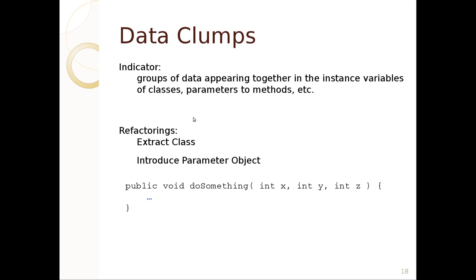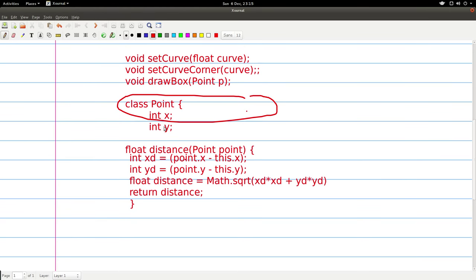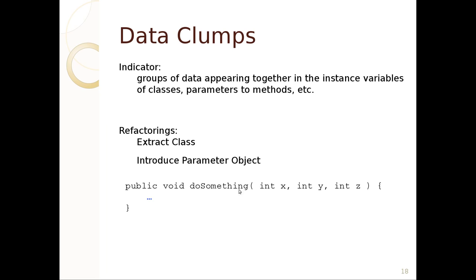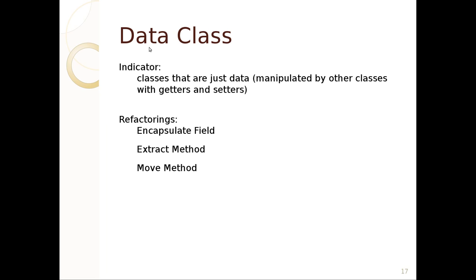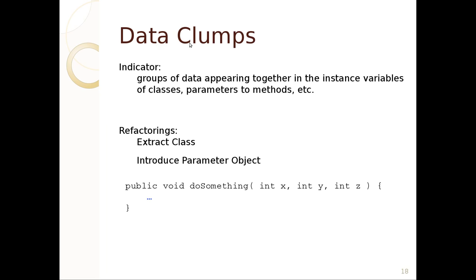Another bad smell is data clumps — groups of data that appear together, usually as instance variables or parameters, that really should be a class. For example, if you have x, y, z parameters appearing together, maybe that's a Point. We could introduce a parameter object — make a Point class to represent it. We could extract a class or make a new class, though it might still be a data class. But a data class is better than a data clump, because related behaviors are always related to each other — pull them out and make a class responsible for them.